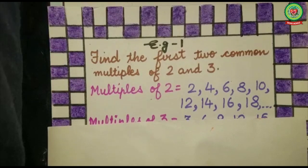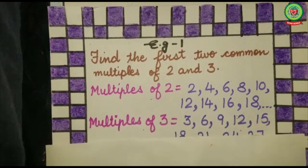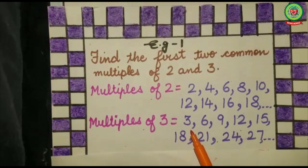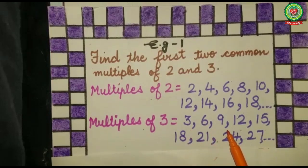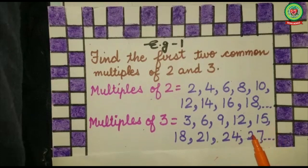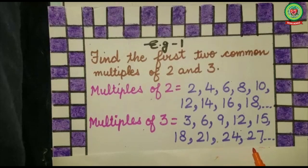Now let's write down the multiples of three. Multiples of three are: three, six, nine, twelve, fifteen, eighteen, twenty-one, twenty-four, twenty-seven, and so on.